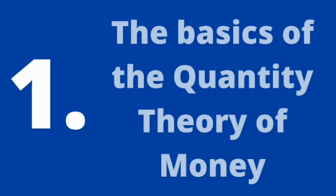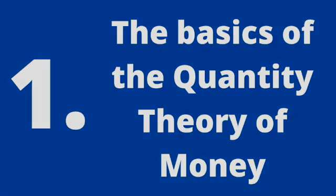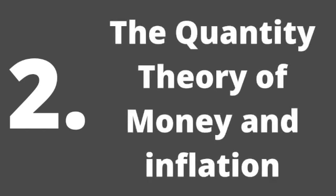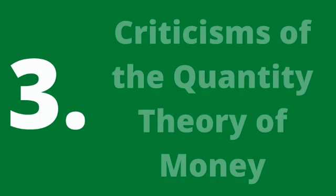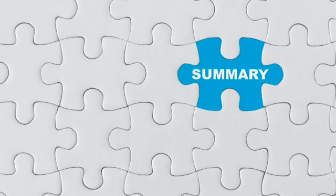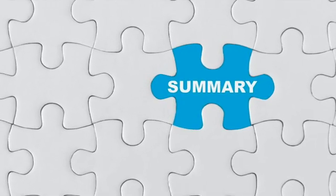In this short video we'll be covering three things: firstly, we'll explain the basics of the quantity theory of money — why MV has to equal PT and what M, V, P, and T actually are. Secondly, we'll outline what the theory says about the link between the money supply and the rate of inflation. Finally, we'll summarize two of the main criticisms of the quantity theory of money, then end with a brief summary.